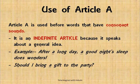Let us begin with the use of article A. Article A is used before words that have consonant sounds — remember, sounds. It is an indefinite article because it speaks about a general idea. For example: 'After a long day...' — L makes a consonant sound, so we use A. 'A good night's sleep does wonders' — G makes the consonant sound G, therefore you use A.